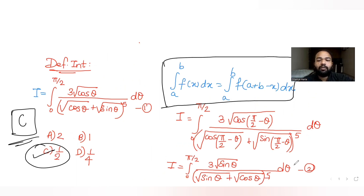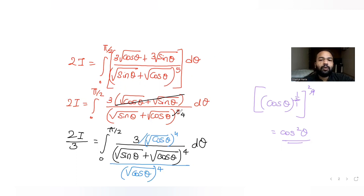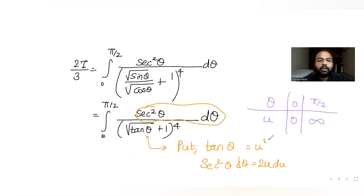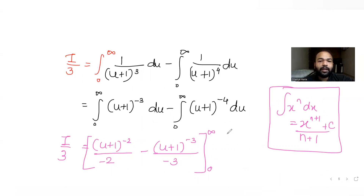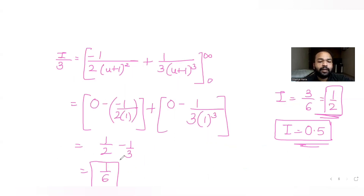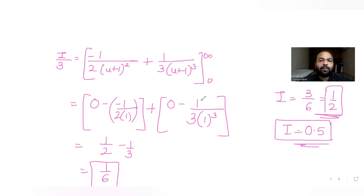To recap: we used the integral property to get one term cancelled from the numerator, leaving four powers in the denominator. We divided by cos²θ to get tan and sec² terms, substituted tanθ = u², then used the add-one-subtract-one trick to split the integral. Applying the limits gives I = 1/2. I hope you understood how to solve these types of questions. See you tomorrow with the next question from JEE Advanced — please share this playlist with friends preparing for JEE. Thank you!